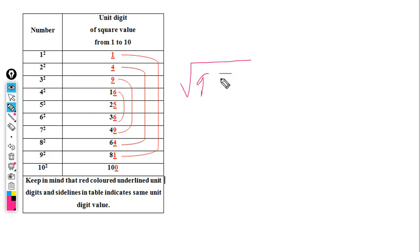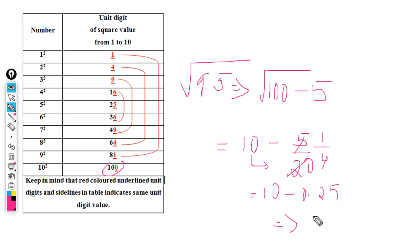Let me take another example. For the square root of 95, we know that 100 is a perfect square. 100 minus 5 equals 95. The square root of 100 is 10, so we start with 10. Double of 10 is 20.